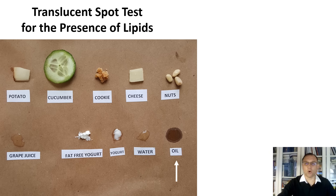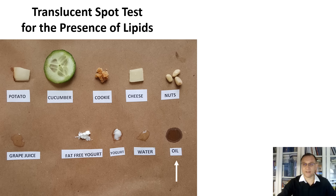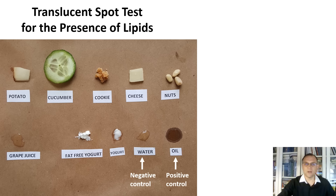As a positive control, we will use — well, you do not even have to think here — the positive control is oil. Oil is 100% lipid; therefore, it is our positive control. Thus, using these two substances as controls, we will be able to see whether foods contain lipids or not.